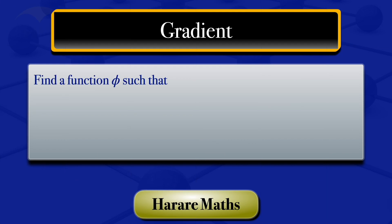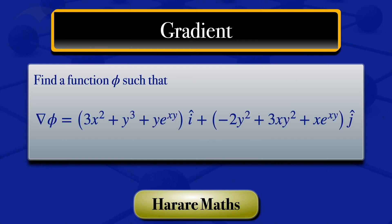In this video, I am going to find a function φ such that grad φ equals 3x² + y³ + y·e^(xy) i minus 2y² + 3xy² + x·e^(xy) j.